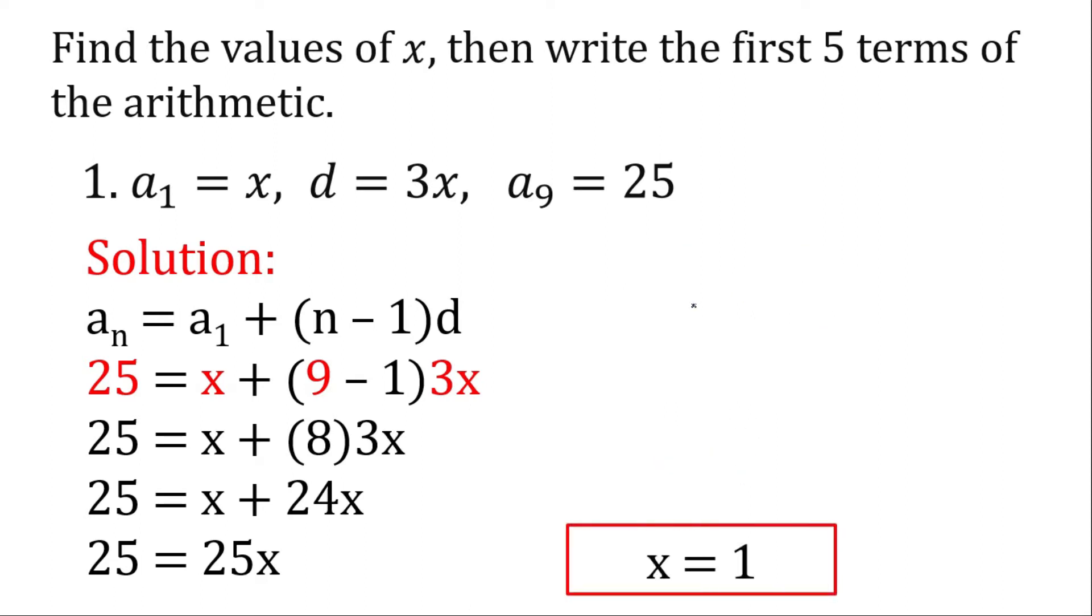So now let's substitute what is a sub 1. If the value of x is a sub 1, then our a sub 1 is equal to 1. Then our common difference is equal to 3 times 1 is equal to 3. Now using these values, let's write the first 5 values. A sub 1 is 1.